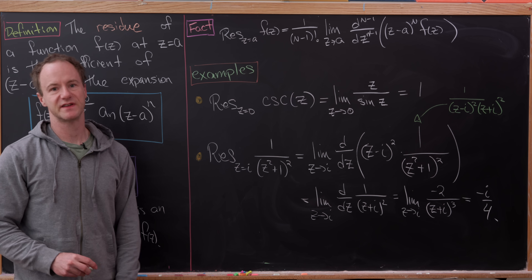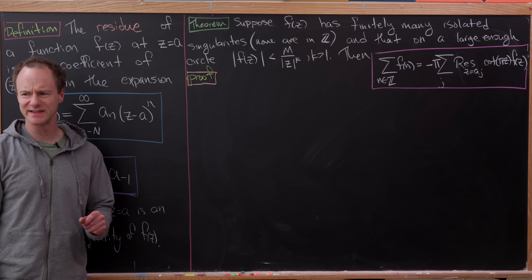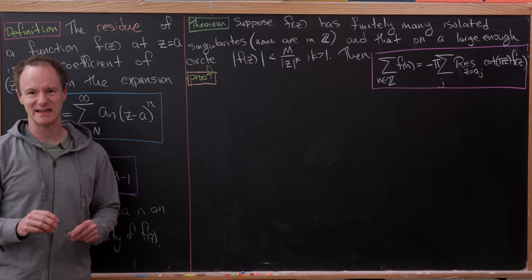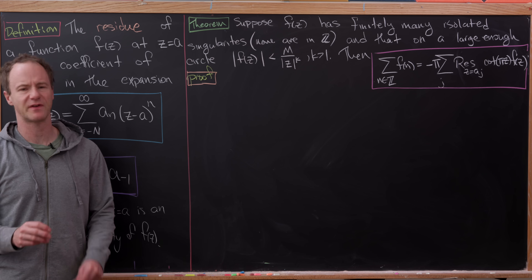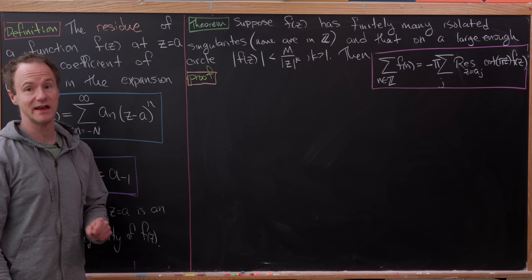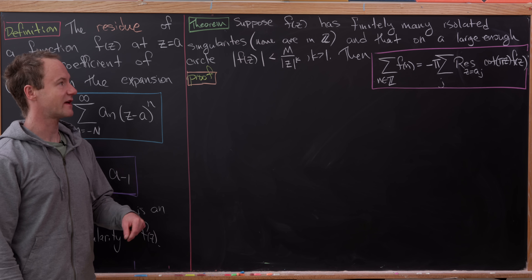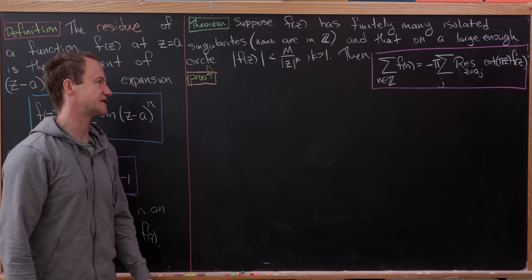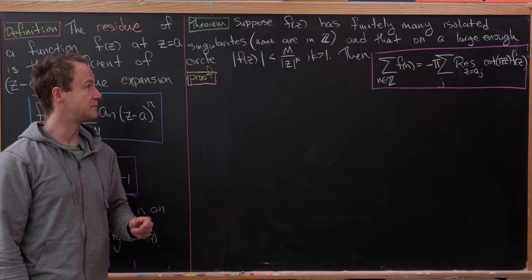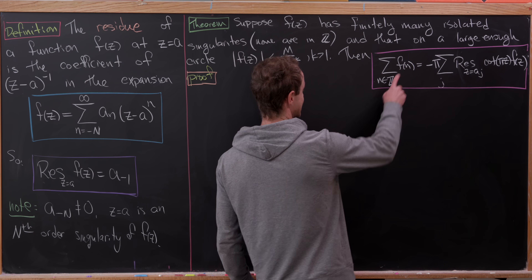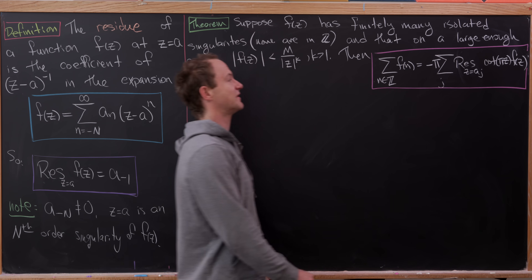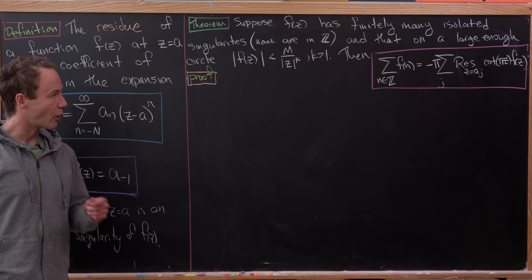Now let's look at our main result for today. This is a well-known result, and we're using the notation and technique from something found on John Cook's website. Suppose f(z) has finitely many isolated singularities and none of them are integers. Furthermore suppose that on a large enough circle the modulus of f is less than some M over |z|^k where k is greater than one. Then the sum over all integers n of f(n) equals minus pi times the sum of all residues of cotangent(πz) times f(z).